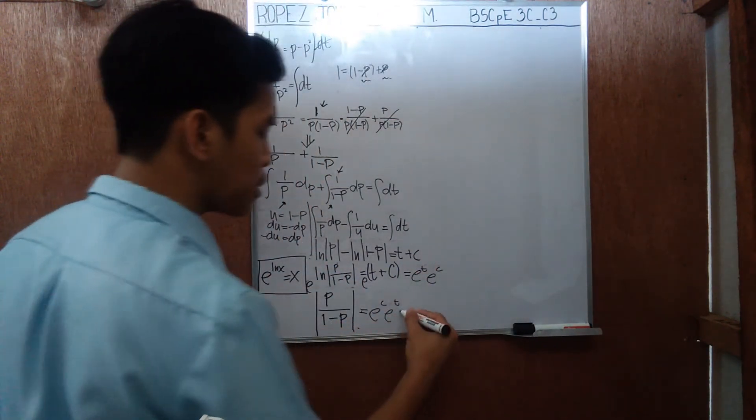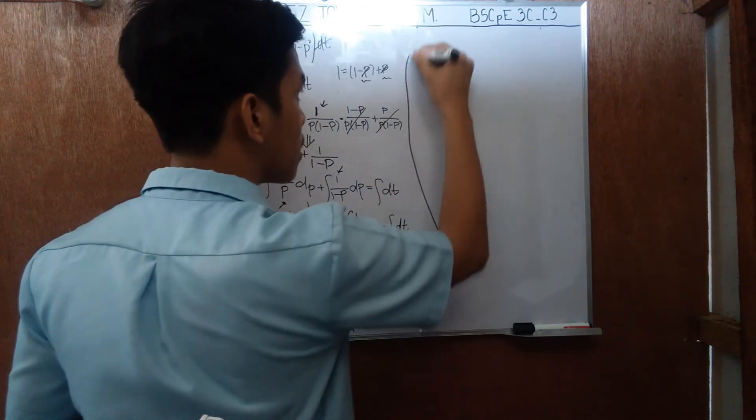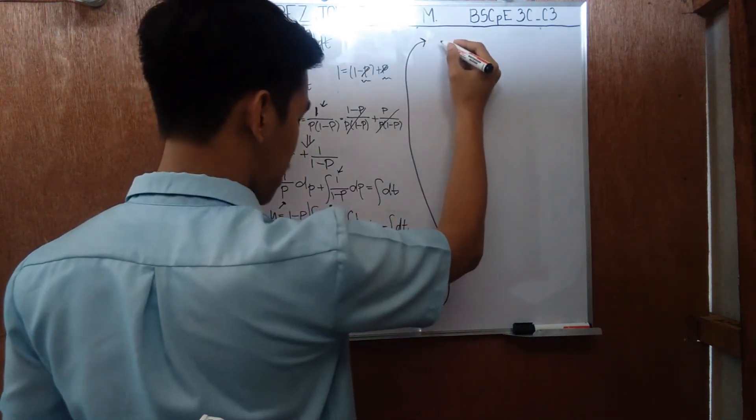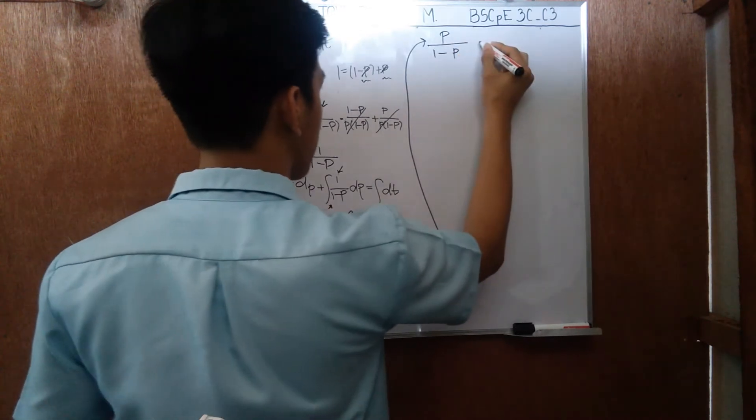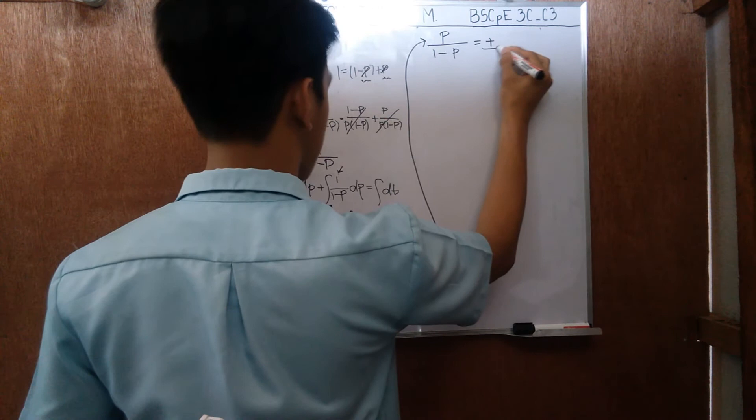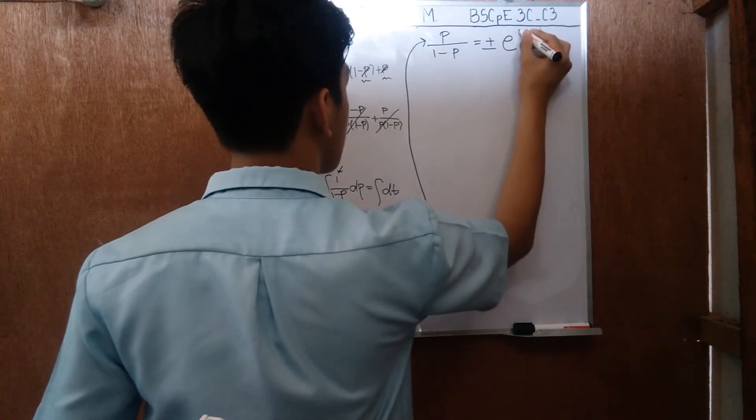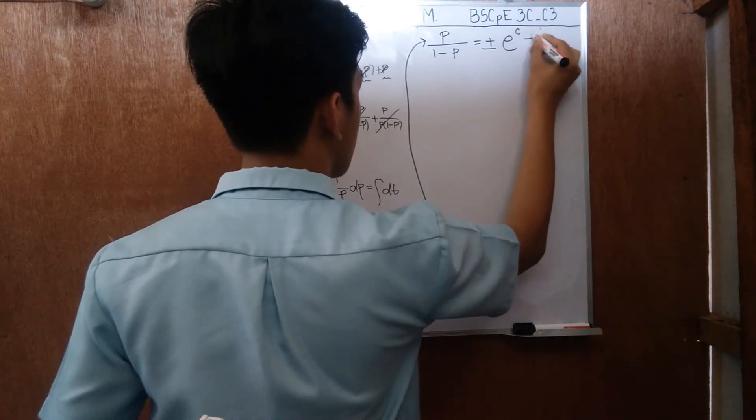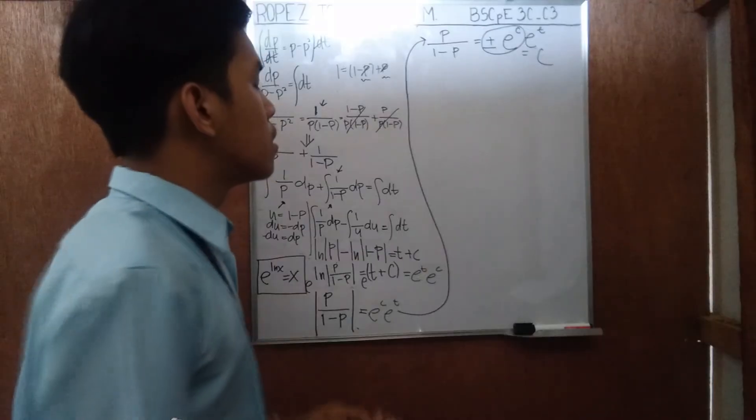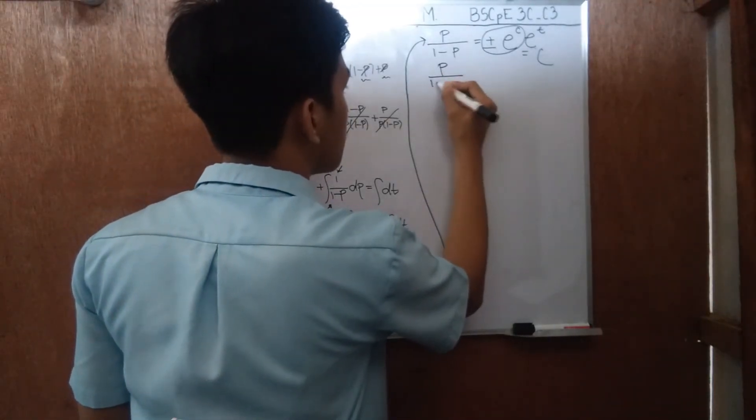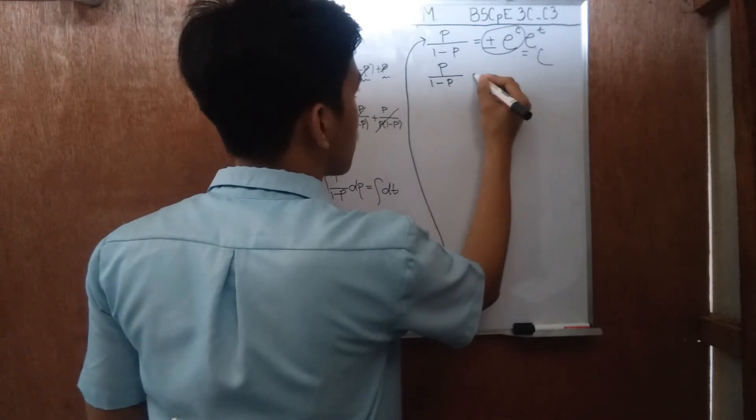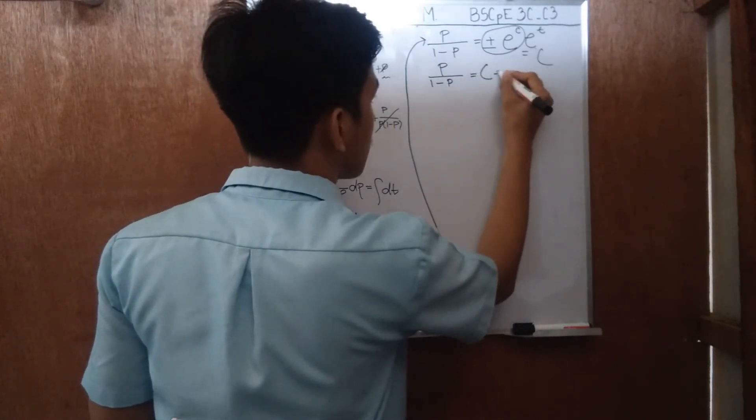So when you drop the absolute value, you will get a plus and minus here. p over 1 minus p is equals to positive, negative, e to the c, e to the t. So we have p over 1 minus p equals c e to the t.